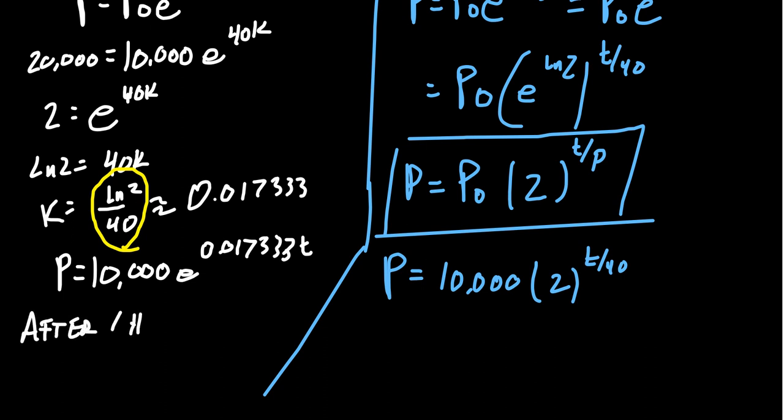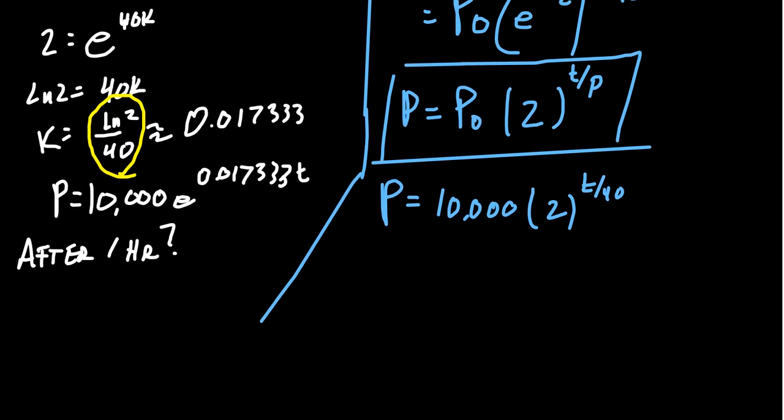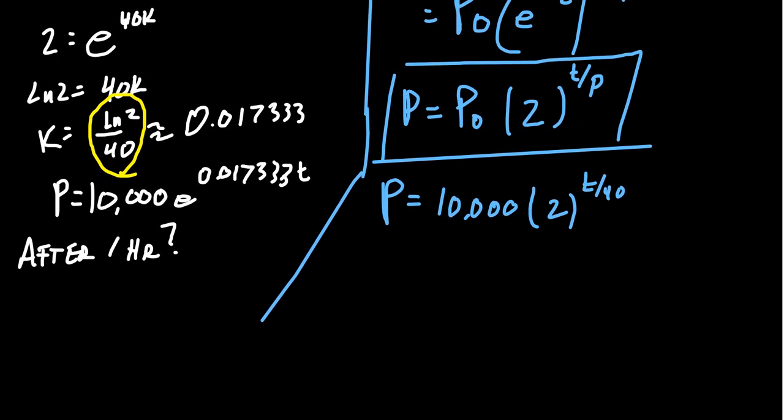After one hour, what would the population be? Well, so we're basically asking what happens when t equals 60. So we can look at the first model that we have.